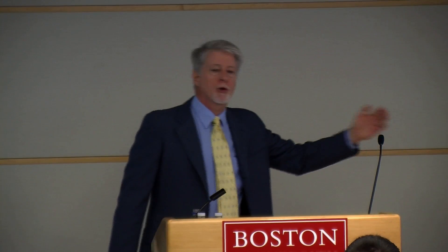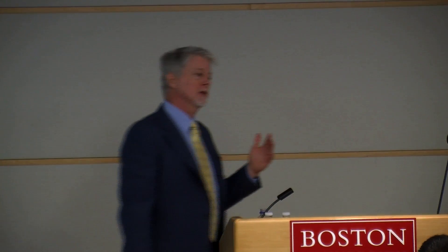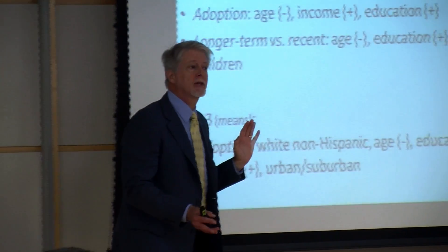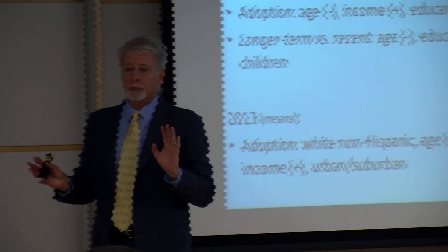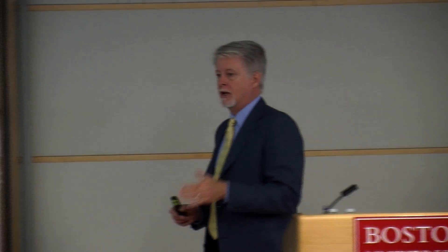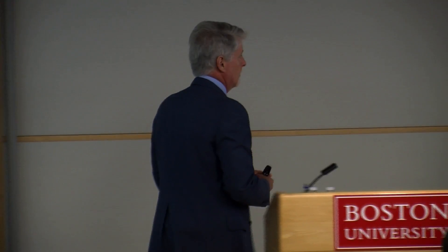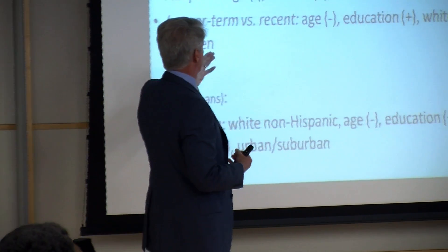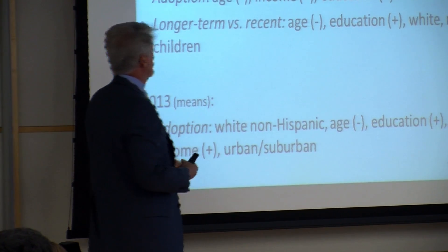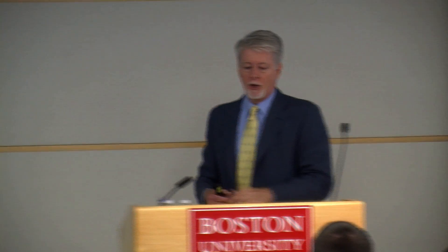What about longer-term versus recent adopters? People who have used the internet for a long time — controlling for age — have a different understanding, different skills, and use the system in different ways. What you find is that age, education, white, and having no children predict having adopted it earlier on. If you don't have children, you're more likely to have adopted it earlier. So if you want to make sure you don't suffer from the digital divide, wait to have children — or have them and then learn from them when they're seven.